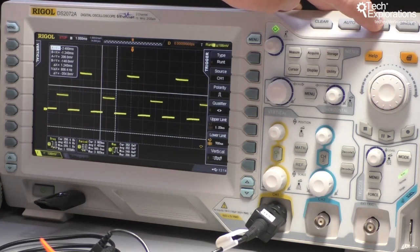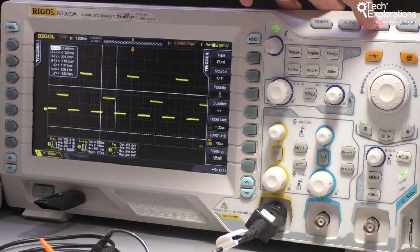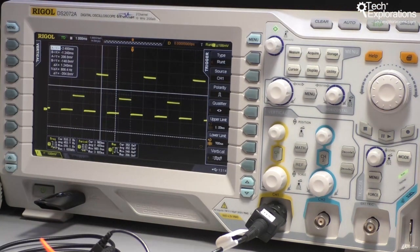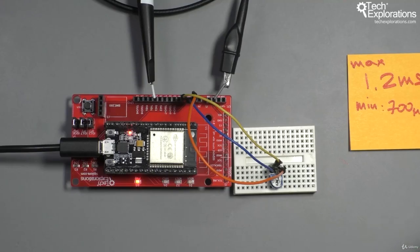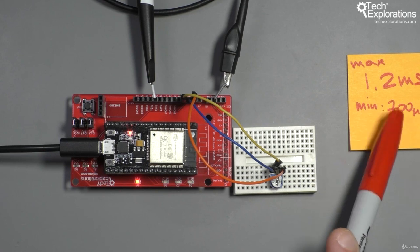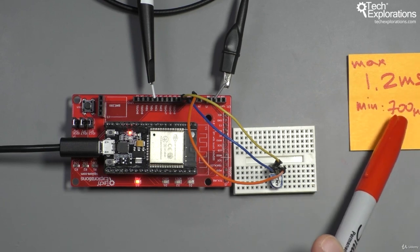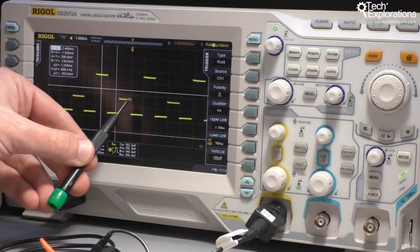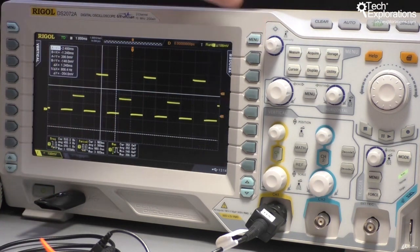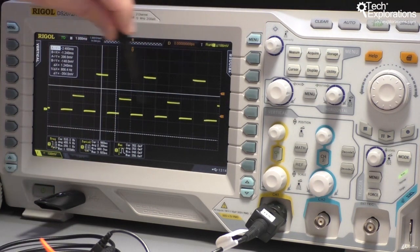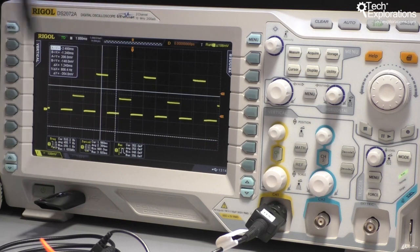Perfect. There you go. So now we've got a very stable trigger, which depends on those two maximum and minimum widths for the Runt trigger. And of course, we still have our T1 and T2 voltage levels for the trigger.